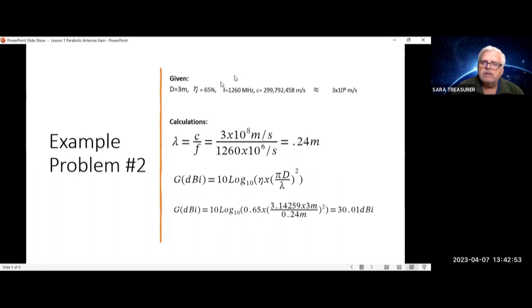Let's go to a bigger antenna. If your diameter is 3 meters, and we have an increase in efficiency of 65%, and you're measuring at a slightly lower frequency of 1260 megahertz, then your wavelength is equal to 0.24 meters.